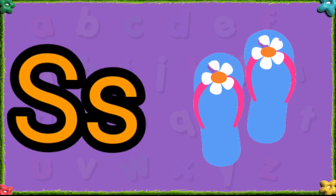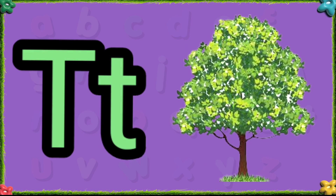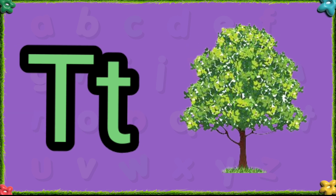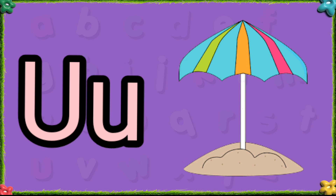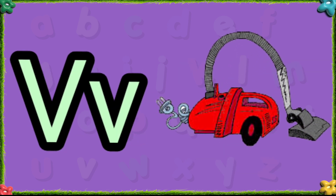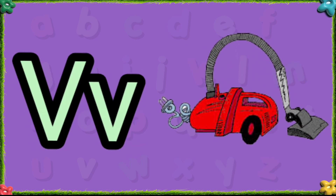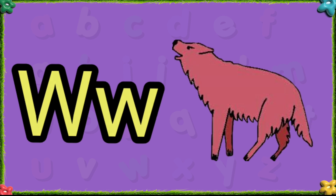S is for sleepers. T is for tree. U is for umbrella. V is for vacuum cleaner.